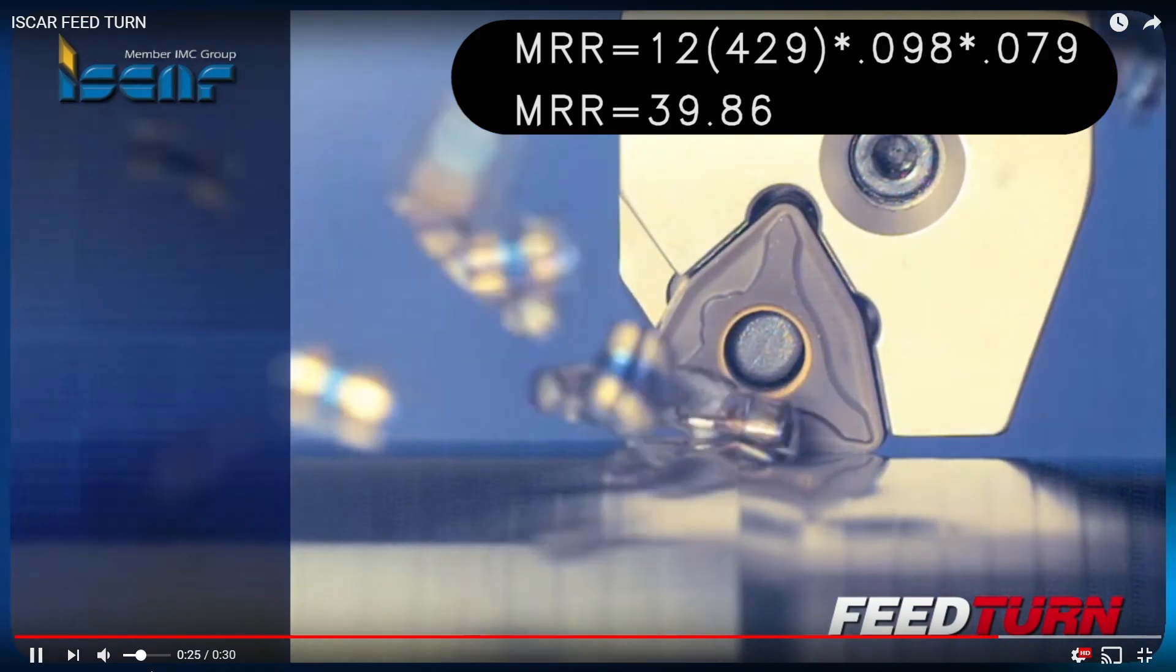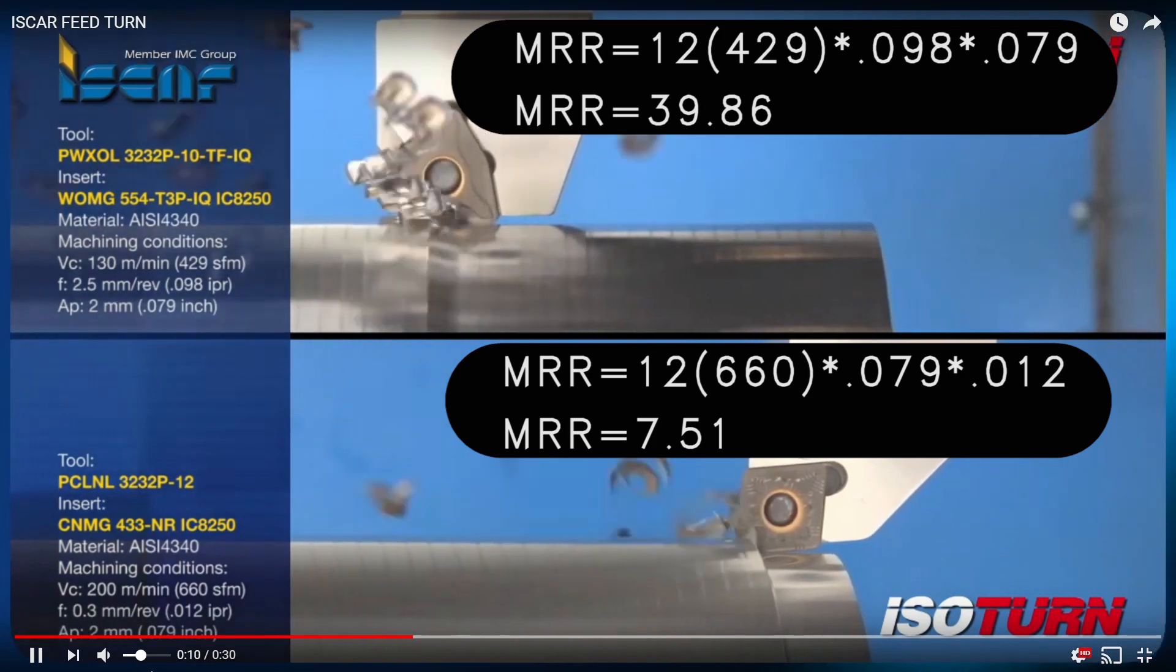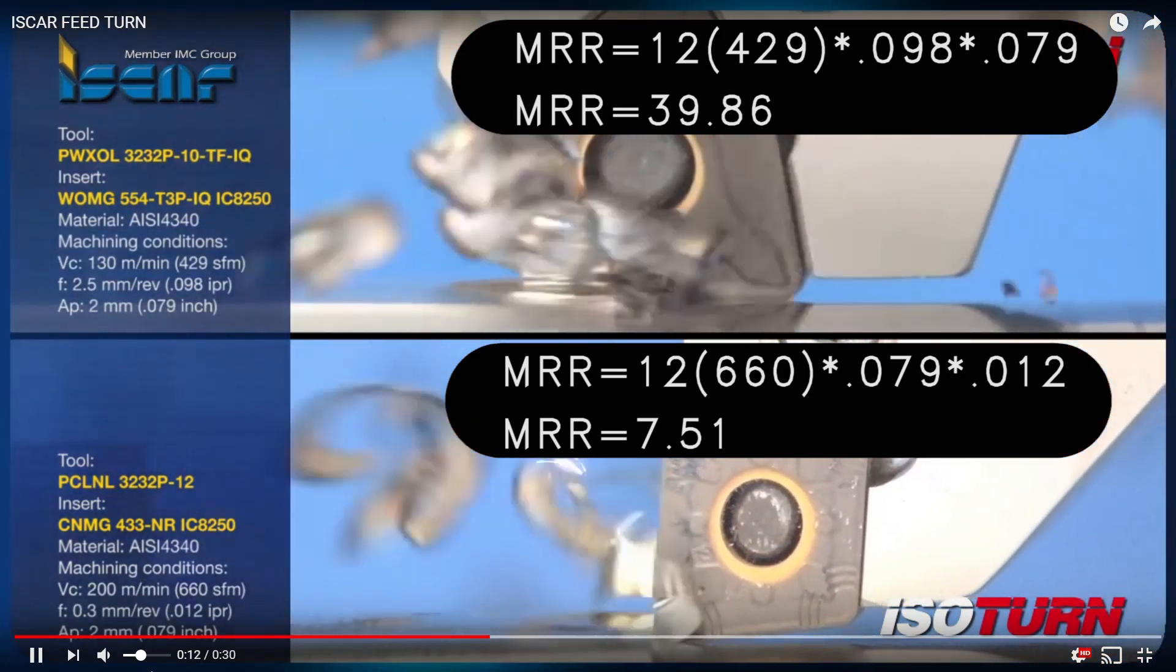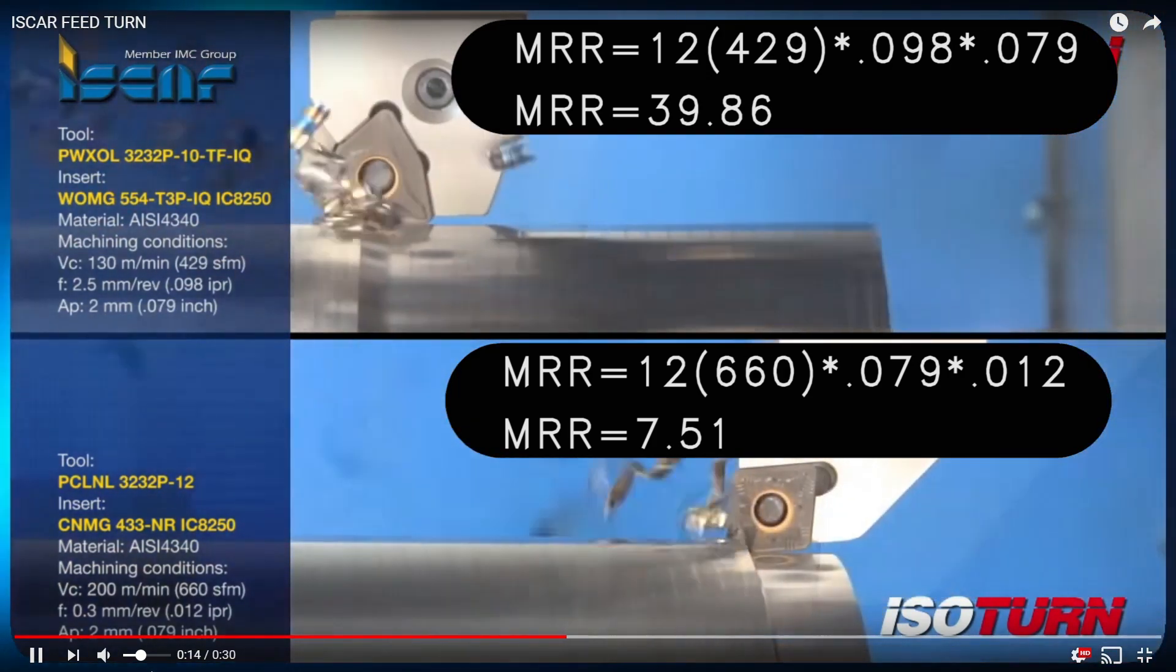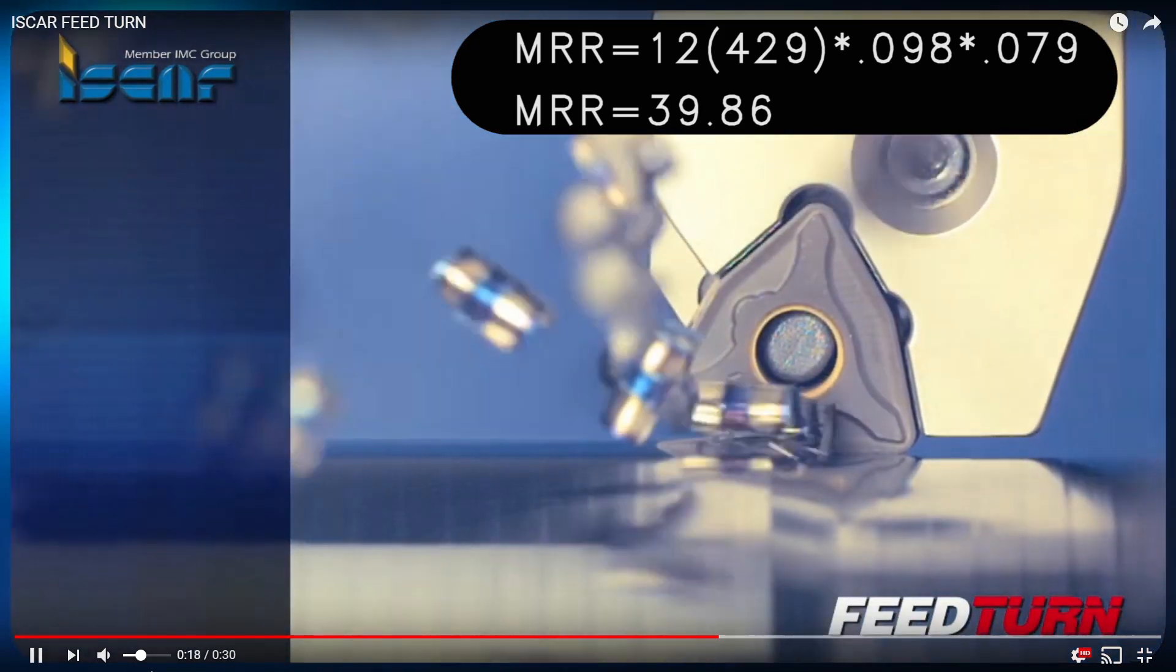They're not going as fast as they could, so we don't really need to pay attention to that. I mean, they cranked it down all the way down to a metal removal rate of like 7.51.